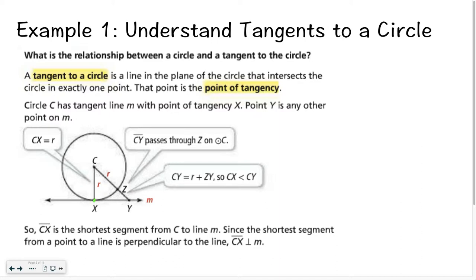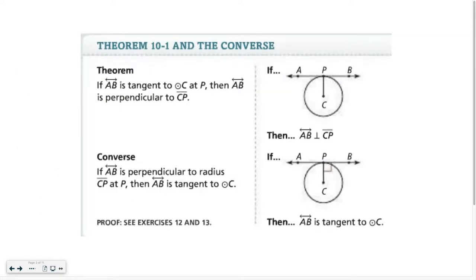Where a tangent line intersects the circle, it also intersects with the radius at a 90-degree angle. So when you have a line that is tangent to the circle, you usually end up with some right triangles. That's basically what you need to know: if something is tangent to a circle, remember that it means you have a 90-degree angle.